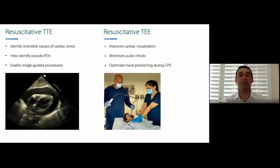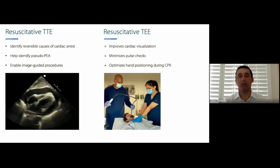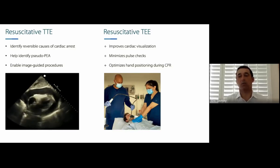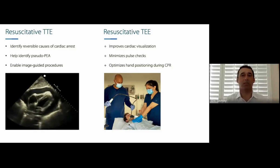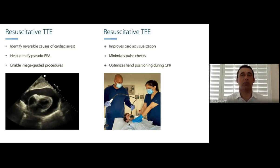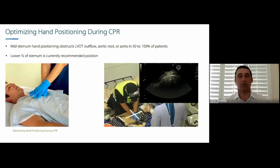Anyone who's tried to do transthoracic echocardiography during CPR with hands on the chest, a Lucas device, or mechanical compression device knows it becomes very difficult to get the windows you need, and you're stuck doing it only during pulse checks. The advantage of resuscitative TEE — putting a probe into the esophagus — is better cardiac visualization. Any reversible cause is more easily identified because the transducer is closer to the heart, and you can have continuous monitoring without interrupting compressions.